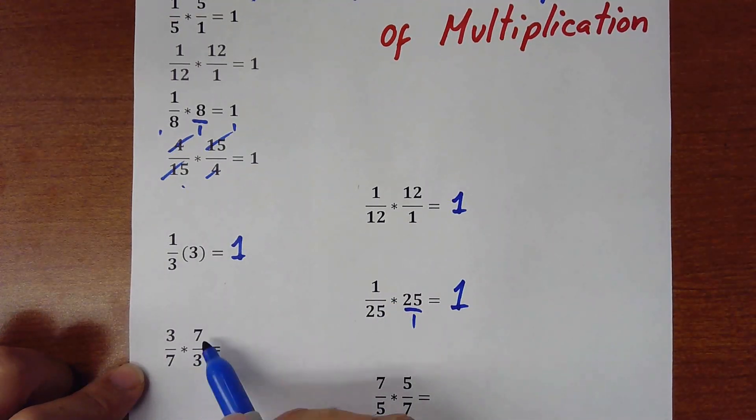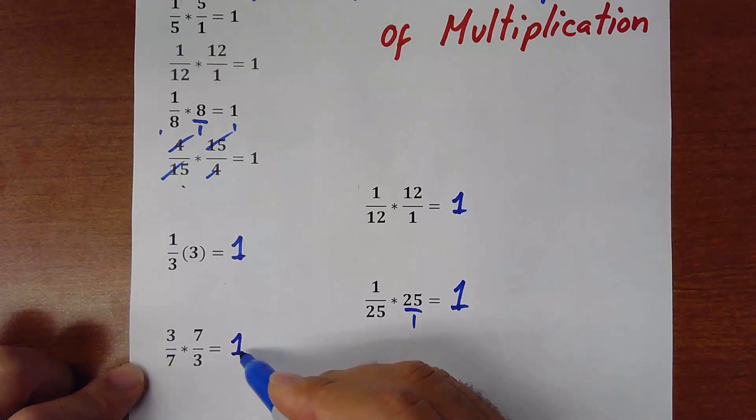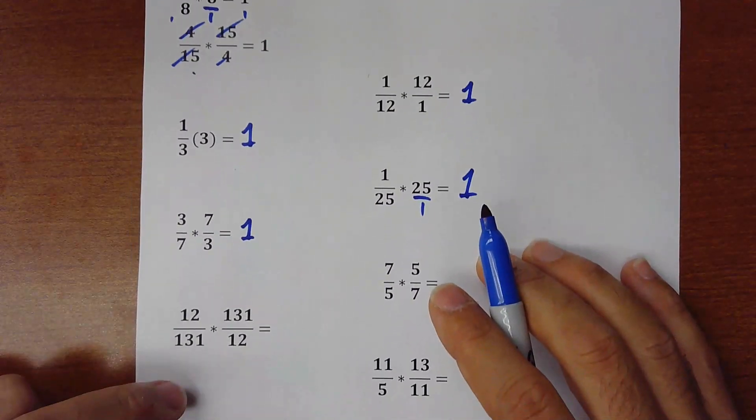3 over 7 times 7 over 3. The answer would be 1. This is very useful when we are solving equations and working with fractions.